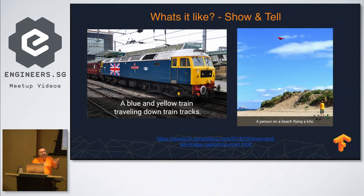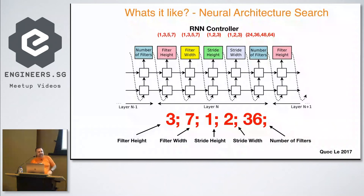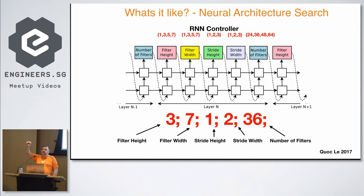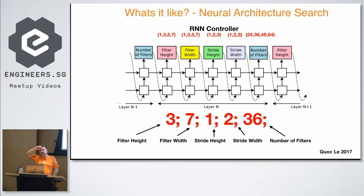The second analogy is: if you use some sort of RNN or LSTM, you can generate a config file. This slide comes from the neural architecture search paper, which basically led to NASNet — the current state of the art in ImageNet models.